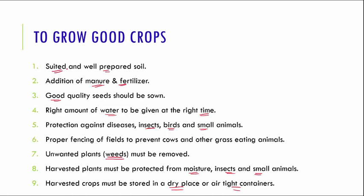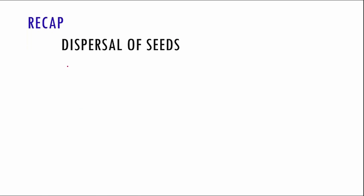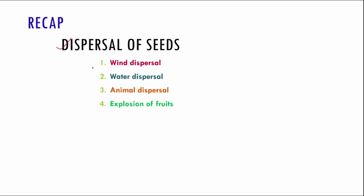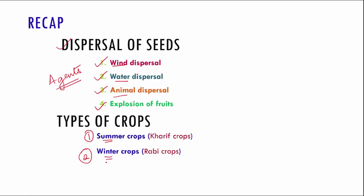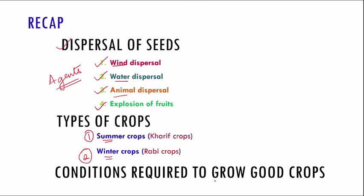With this we complete this chapter. Let us do a quick recap of what we studied in part two. We spoke about dispersal of seeds — by wind dispersal, water dispersal, animal dispersal and explosion of fruits. Wind, water and animals are called agents of dispersal. Then we saw what crops are and their types: summer crops and winter crops. Lastly we spoke about the nine conditions required for good crops to grow.